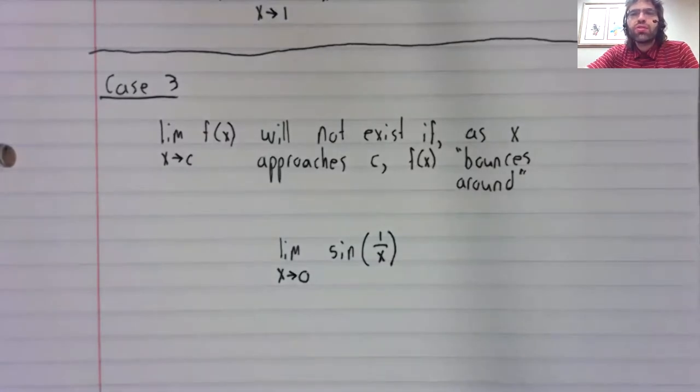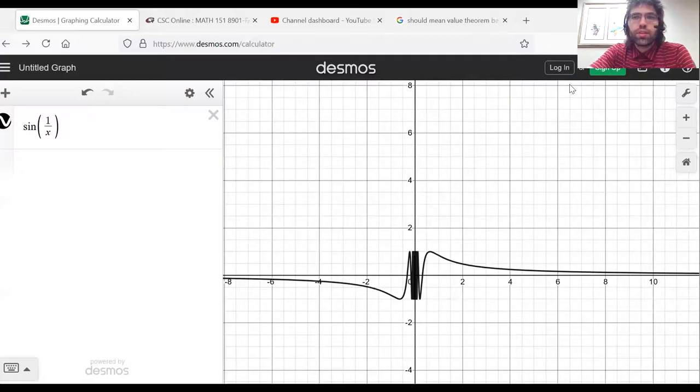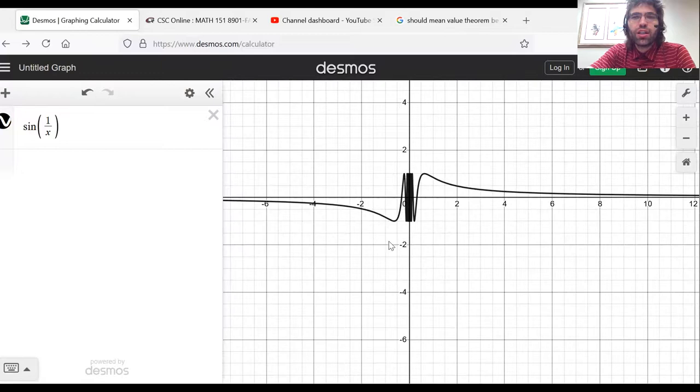If we go over to Desmos, you see Desmos is kind of struggling to graph this function near zero.